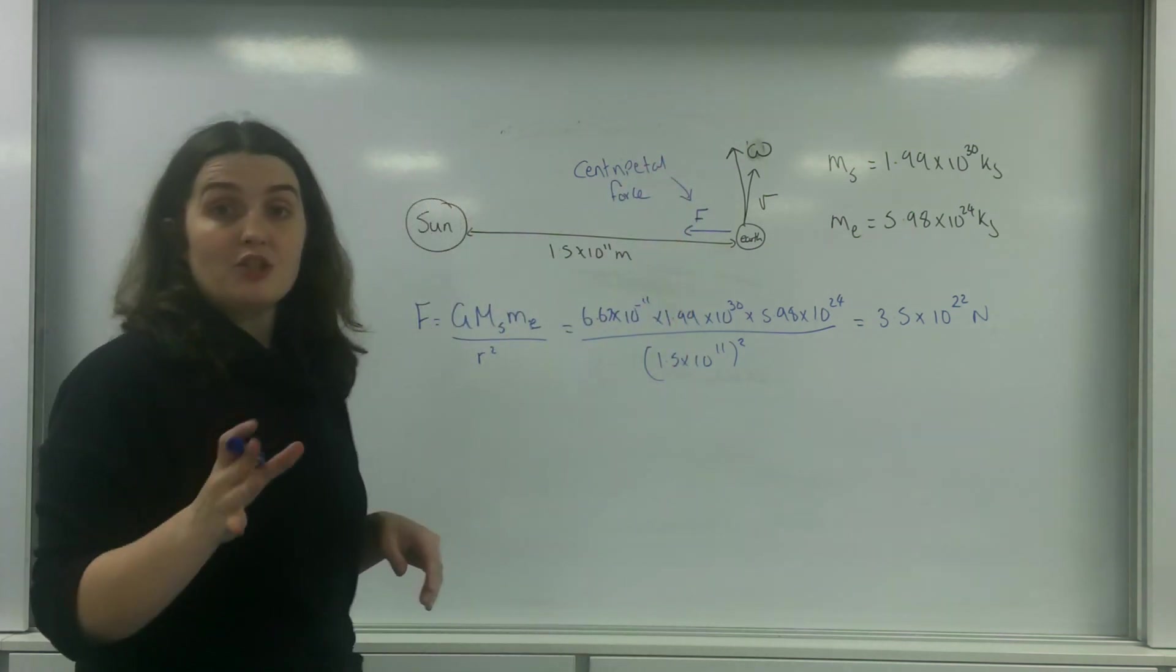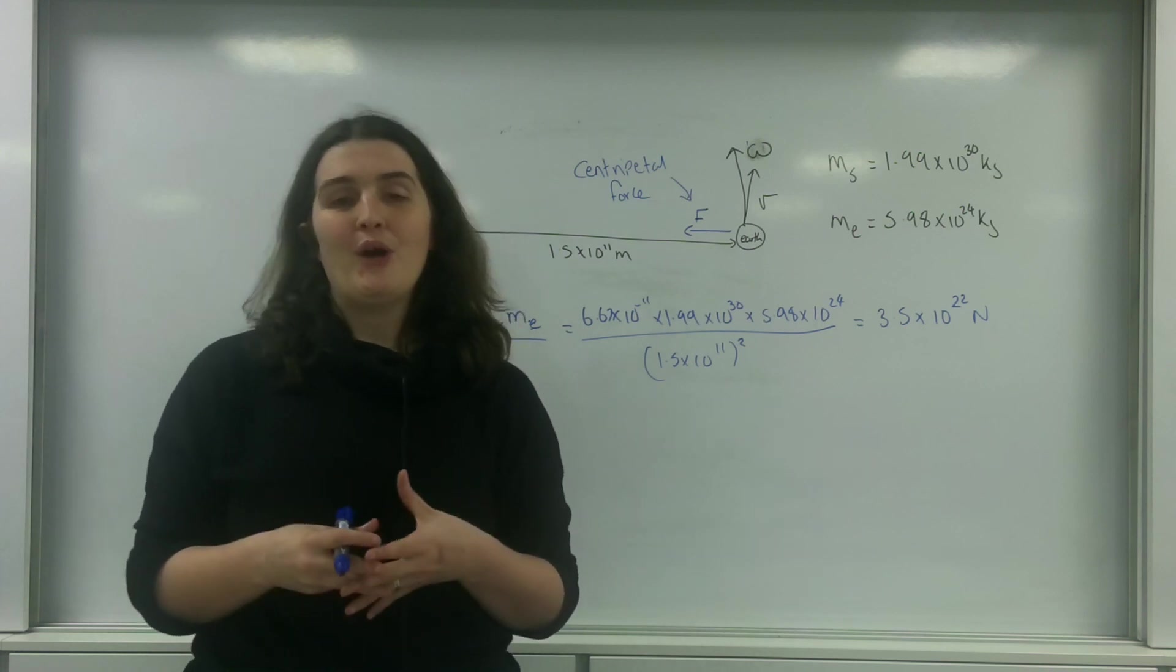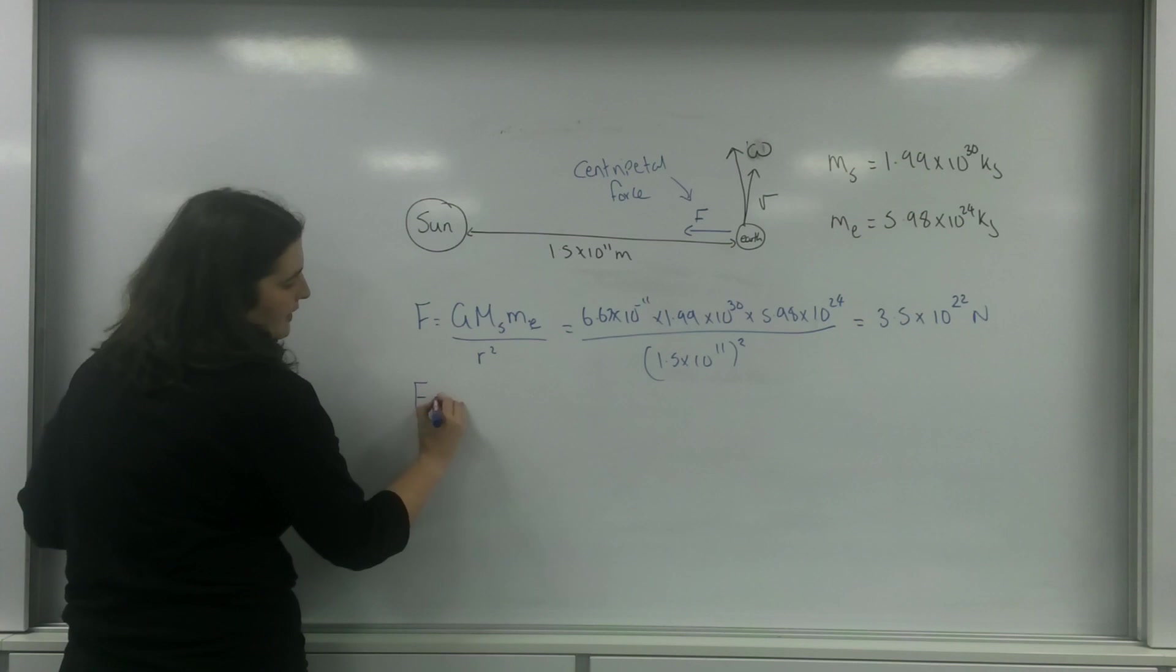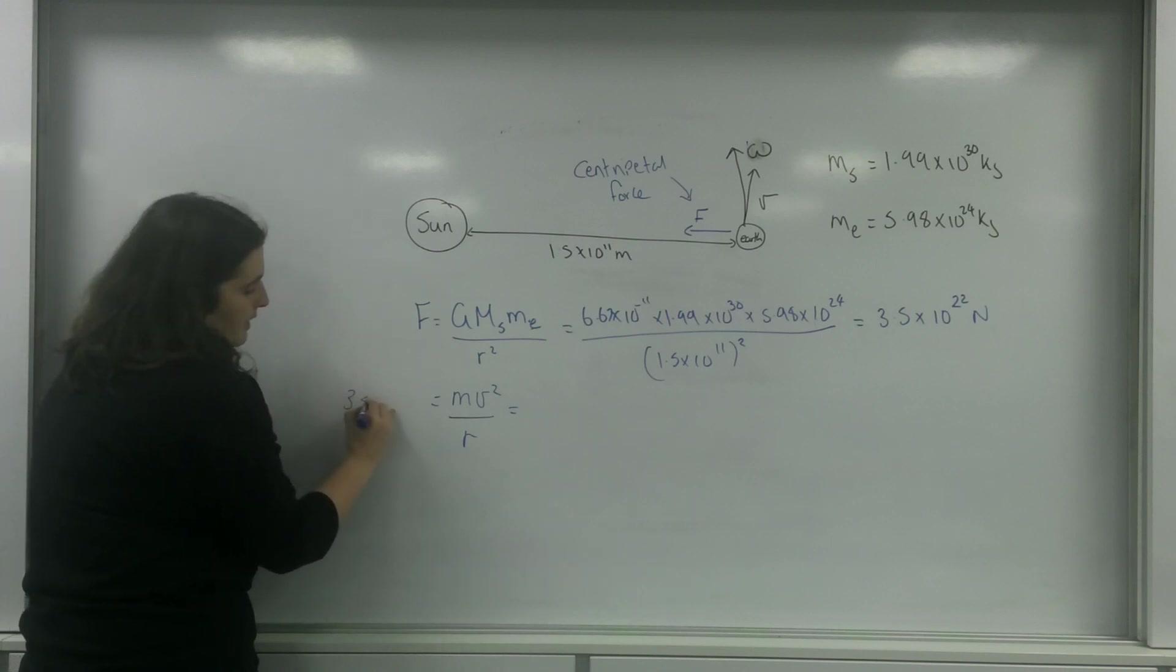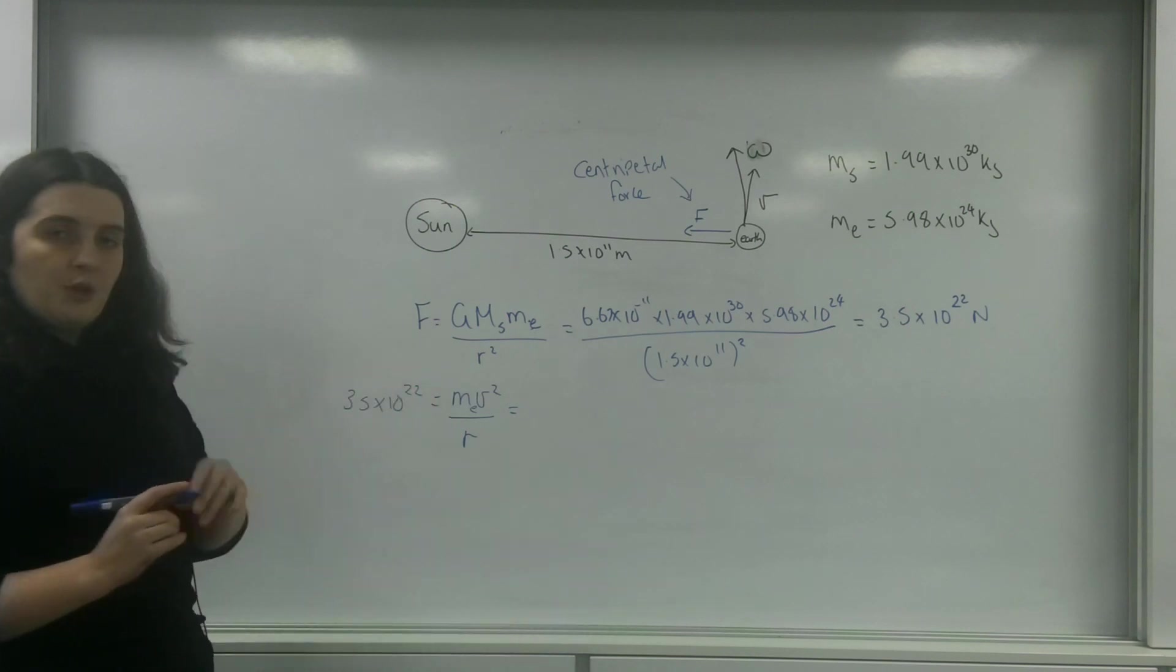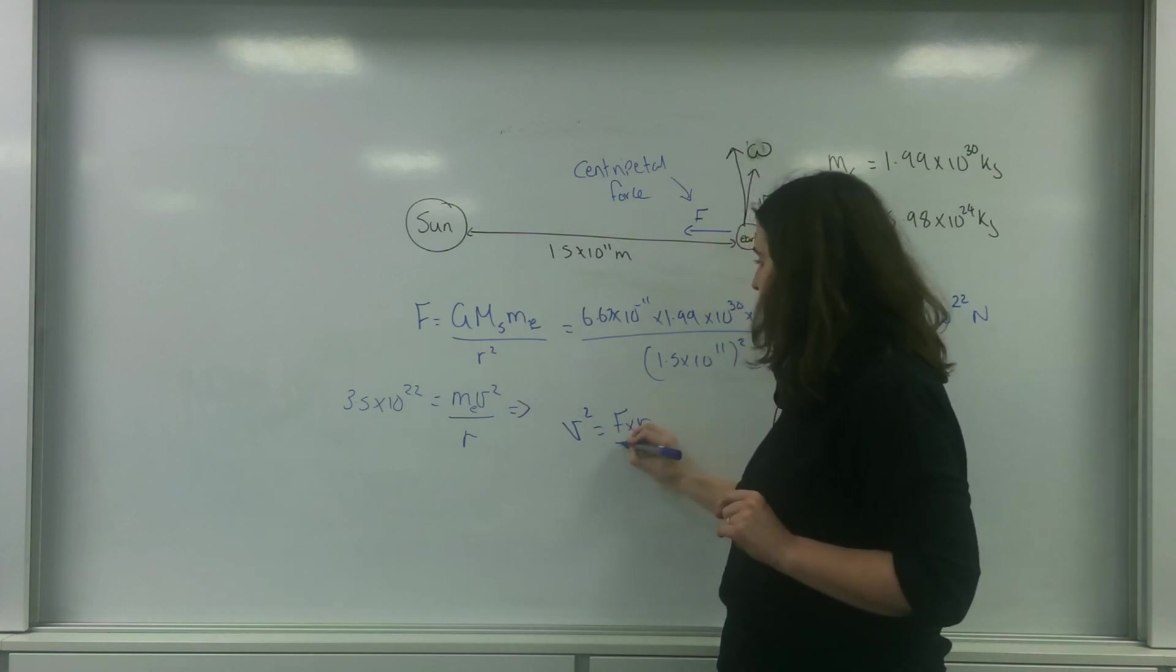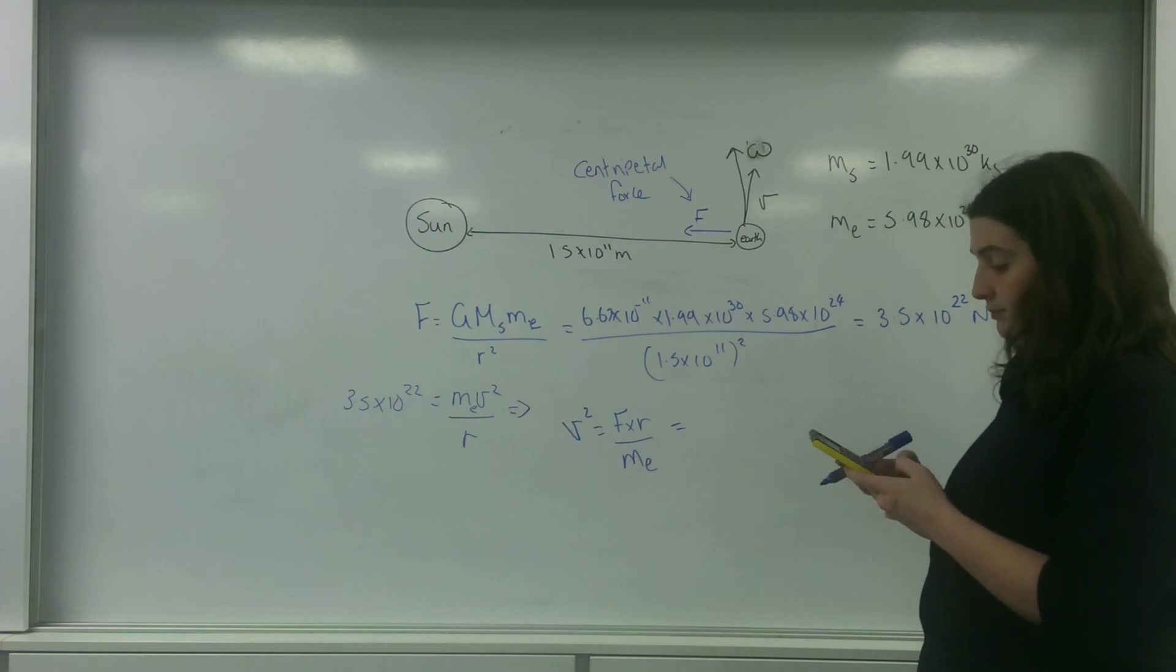Which means I can use all of my centripetal and circular motion force equations with it. What I'm going to do is use this information to see if I can prove to you the year, how long is one year, one orbit. So I know that F equals M V squared over R. This force here, this 3.5 times 10 to the 22, is going to be my centripetal force. And remember, this M is the thing that's moving in the circle, so this is the mass of the Earth. I'm going to find my velocity. My velocity squared is my force times the radius over the mass of the Earth. So that's 3.5 times 10 to the 22 times 1.5 times 10 to the 11 divided by 5.98 times 10 to the 24.